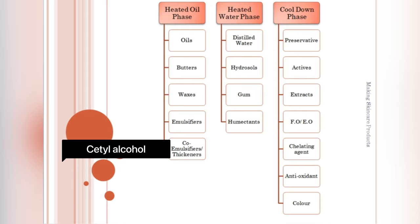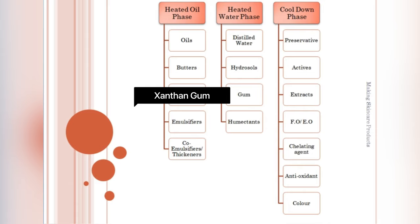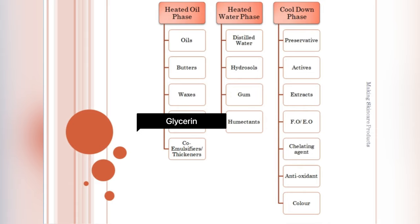Now for the water phase, distilled water is used. For the gum, xanthan gum, and for the humectant, glycerin. Glycerin is cheap yet effective and has good moisturizing properties.